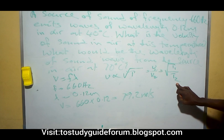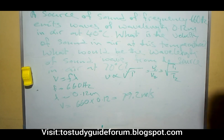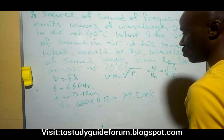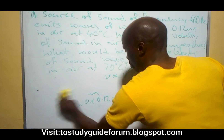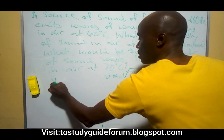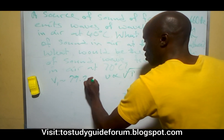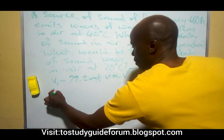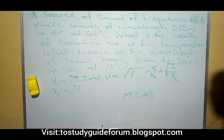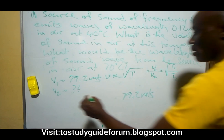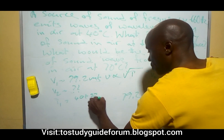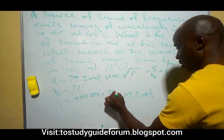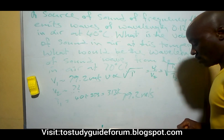Our initial velocity V1 is what we already calculated: V1 equals 79.2 meters per second. V2 is what we are looking for, because we cannot get the wavelength without first getting the velocity. The temperature T1 equals 40 plus 273, which gives us 313 Kelvin.